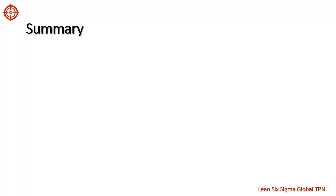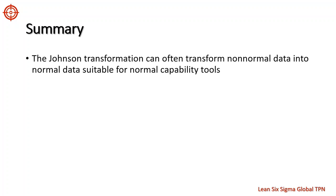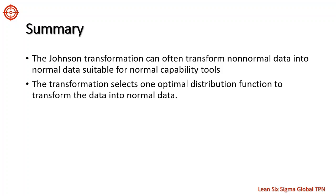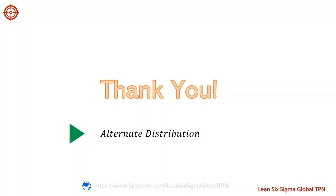So let's review. The Johnson transformation can often transform non-normal data into normal data suitable for normal capability tools. The transformation selects one optimal distribution function to transform the data into normal data. Thank you for listening. In the next lesson we talk about the alternative distribution approach.